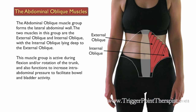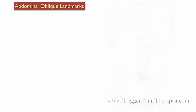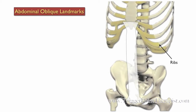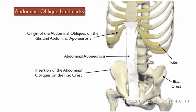Let's take a look at the landmarks: the lower ribs, the abdominal aponeurosis, and the iliac crest. The origin of the abdominal obliques is on the ribs and the abdominal aponeurosis, and the abdominal obliques insert on the iliac crest.